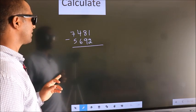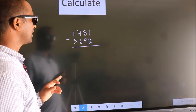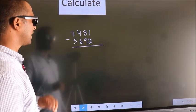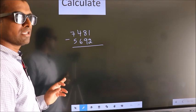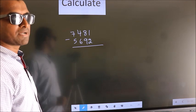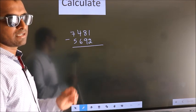Calculate 7481 minus 5692. How do we subtract faster?